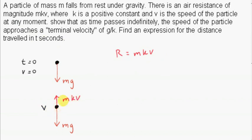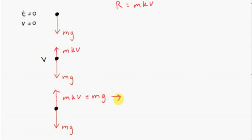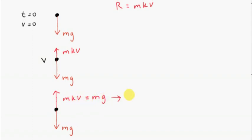As v increases, mkv will approach the weight of the particle. There will come a time when the resistance force equals mg. From this equation, if the resistance force becomes equal in magnitude to the weight, then k equals g over v, or v equals g over k. The speed at which this happens is called the terminal velocity — or final velocity — because the speed does not increase beyond this.